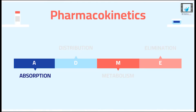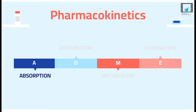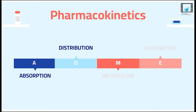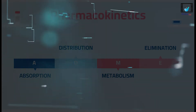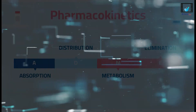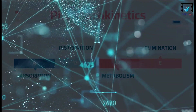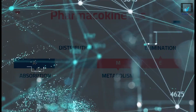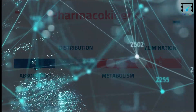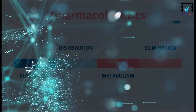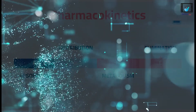We know that this discipline involves ADME processes — absorption, distribution, metabolism and elimination — which affect drug concentrations in different body tissues. And to simplify the complexity of drug handling through the different pharmacokinetic processes, mathematical principles can be used to describe the different processes.